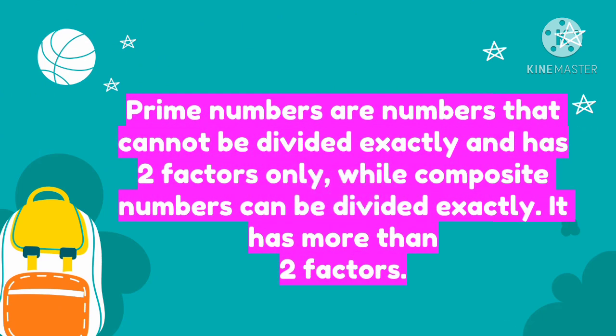Prime numbers are numbers that cannot be divided exactly and has 2 factors only. While composite numbers can be divided exactly and it has more than 2 factors.